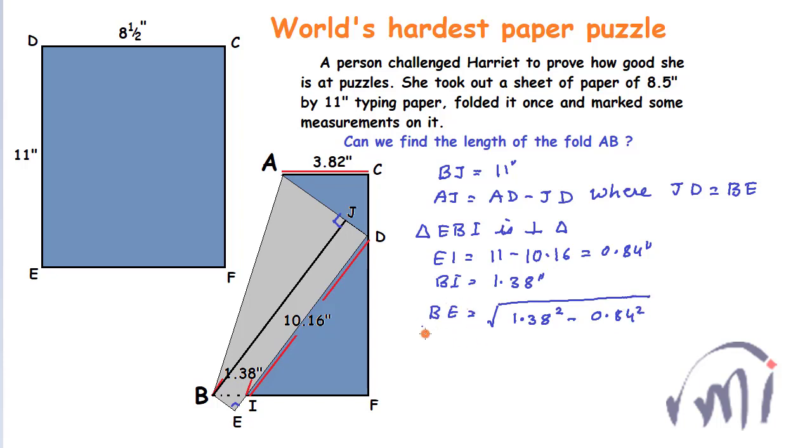This BE we are trying to find using Pythagoras theorem so this will be equal to square root of 1.1988 or this will be equal to 1.09 so here we have found BE is equal to 1.09 inches.